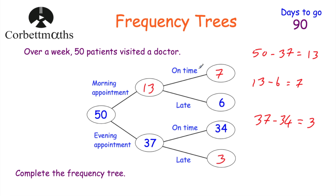So we've completed it and we can check it. 13 plus 37 is equal to 50. The 7 plus 6 is equal to 13 morning appointments, and 34 plus 3 is equal to 37. So that's it - we've completed the Frequency Tree.